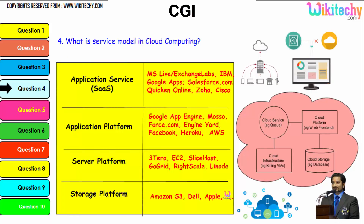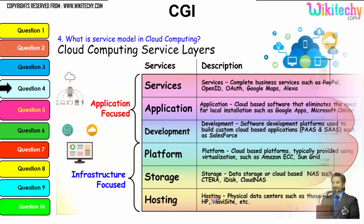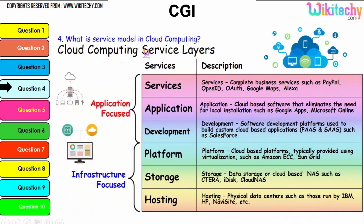Digging further into the service model, typical examples are: application service, application platform, server platform, and storage platform — the last being provided by Amazon S3, Dell, and Apple. The important service layers are: services, application development, platform, storage and hosting. These are all typical examples under each service, and these are important services that will also be asked about in cloud computing interviews.